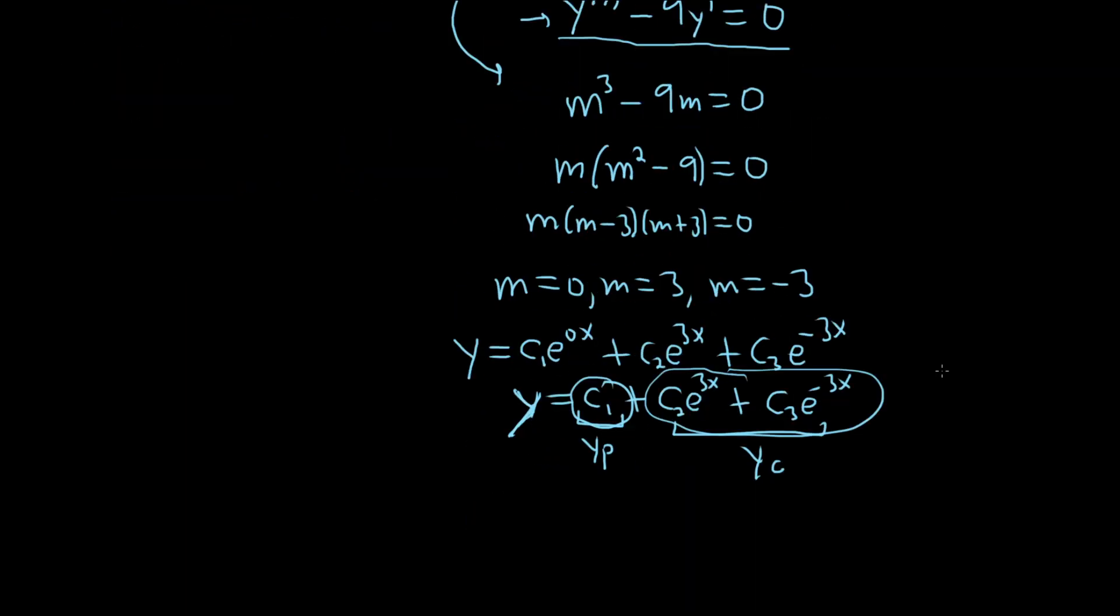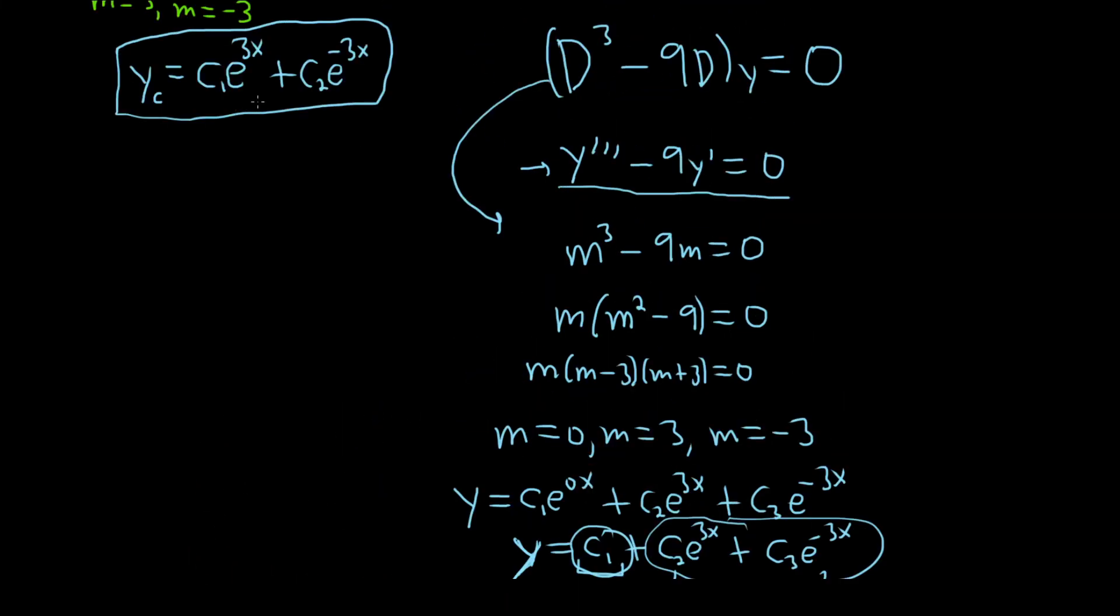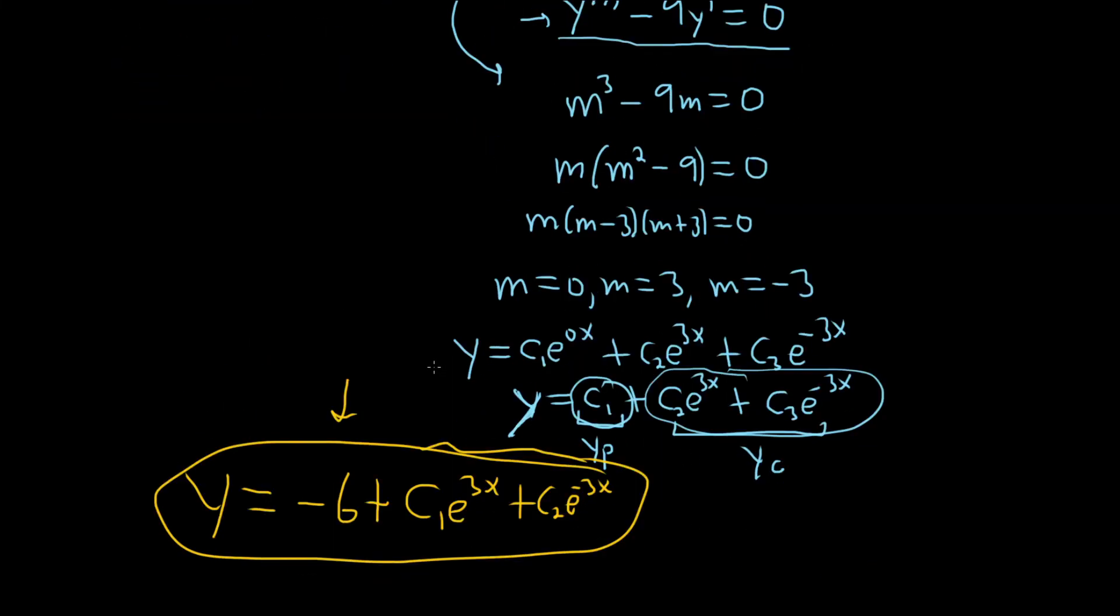So now we come down here and we finish our question. So y equals, said it was negative 6 plus. And then I'm going to go back and use my original c1 and c2. So c1 e to the 3x, c1 e to the 3x, and then it was c2 e to the negative 3x. And that's it. That would be our yc plus our yp. Our yp was up here. So that's it.